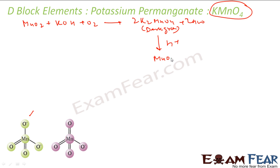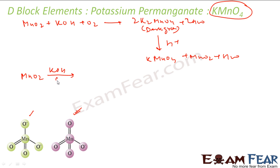The dark green MnO₄²⁻ (manganate ion) — when you acidify it — gives KMnO₄ (MnO₄⁻) and MnO₂ and some water molecules. So MnO₄²⁻ on acidification becomes MnO₄⁻, which is permanganate. For commercial preparation, we take the alkaline oxidative fusion of MnO₂, fuse it with KOH, oxidize by air to get MnO₄²⁻.